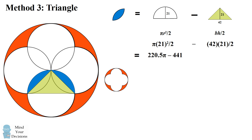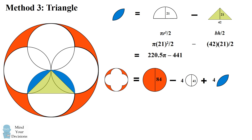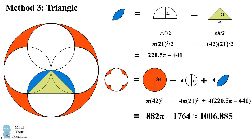We then proceed just as we did in method 2, calculating the shaded region by subtracting from the large circle four of the smaller circles and then adding back in four of these overlapping regions. We've already calculated each of these, so we get exactly the same answer of 882 pi minus 1764, which is approximately 1006.885.